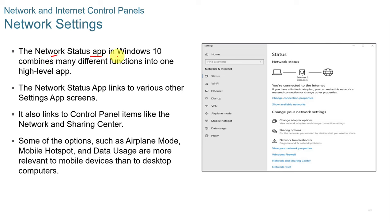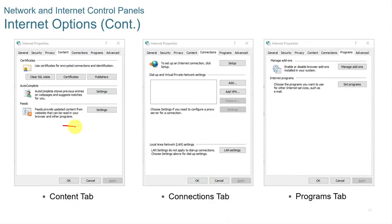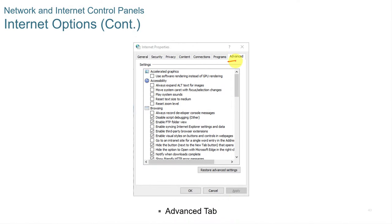Network Settings: The Network Status app in Windows 10 combines many functions into one high-level app and links to Control Panel items like the Network and Sharing Center. Options include airplane mode, mobile hotspot, and data usage relevant to mobile devices. Internet Properties tabs include General, Connections, Privacy, Content, and Advanced.